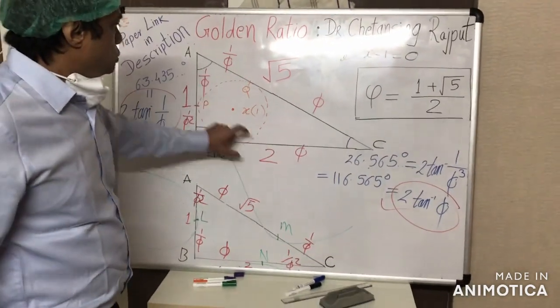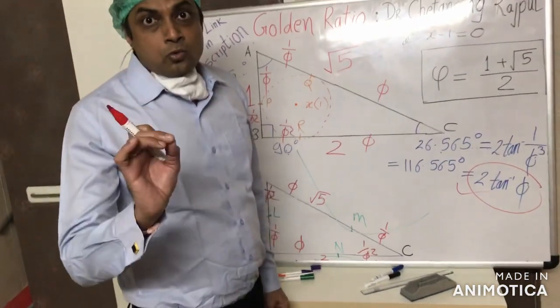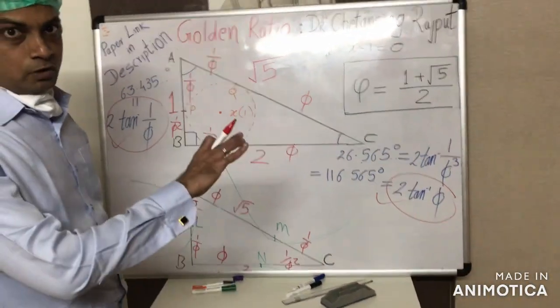More importantly, this triangle 1 to root 5 is found to be closely related to regular pentagon. That we will see in the next session of this video.